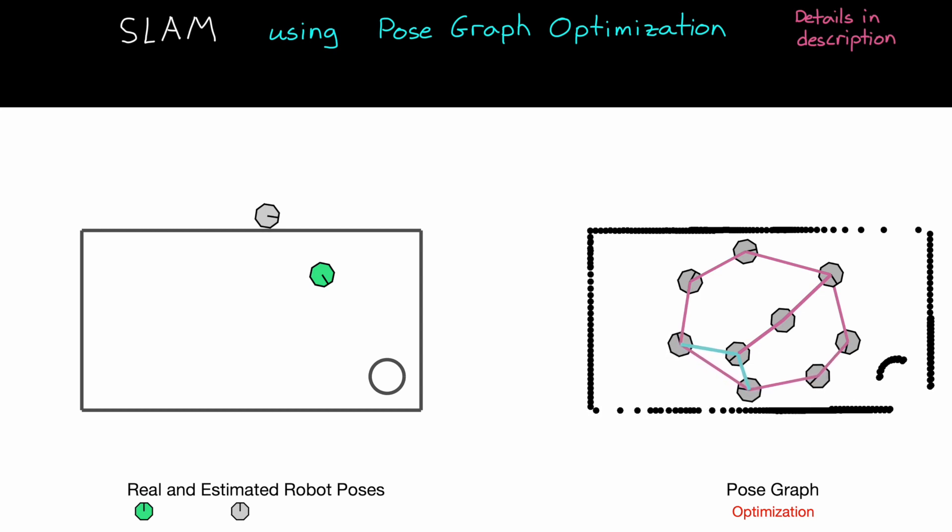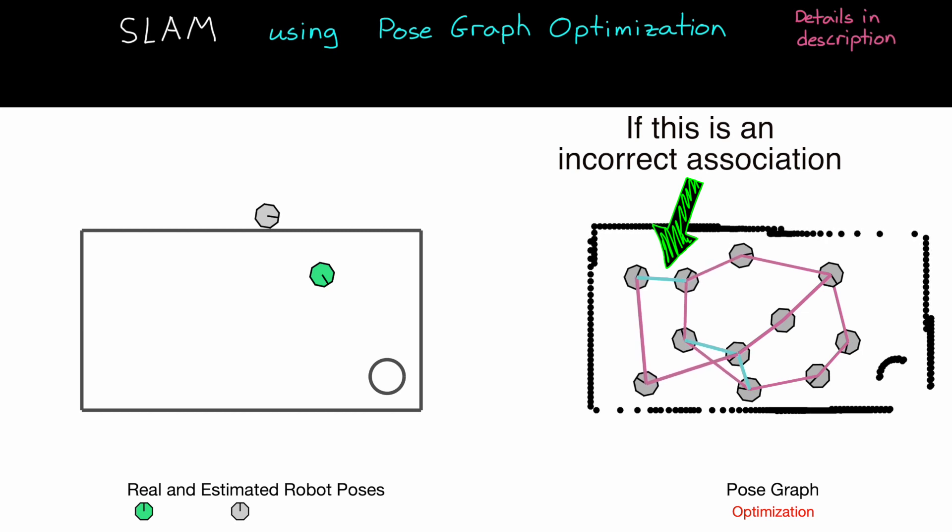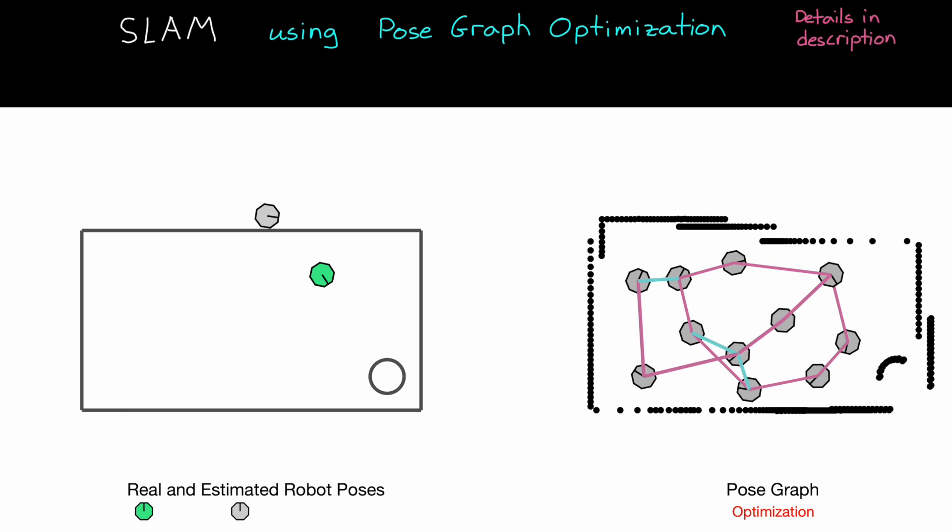In this way, you can see how after each loop closure, the graph will continue to improve its global model of the environment and the past robot poses. That is, as long as the two poses that you connect are truly looking at the same environment feature. If you make an incorrect association and you build an edge with a constraint that is not real, you can imagine how this would persist in your graph and continue to skew your optimization process every time you run it. It would always be pulling those nodes in a direction away from the truth. So it's incredibly important that you are confident in any loop closures that you make. In fact, it's better to miss a real loop closure than it is to add a false one. You can always drive around some more and make another closure in the future, but it's harder to remove the bad ones once they're in.